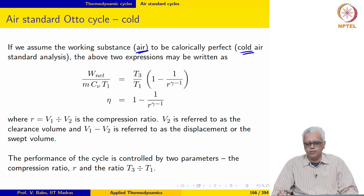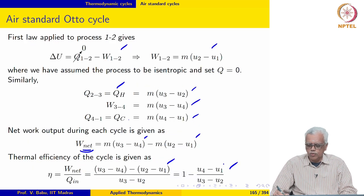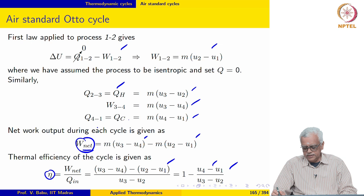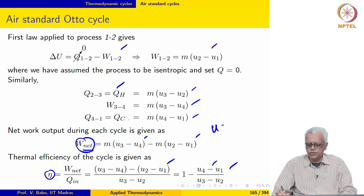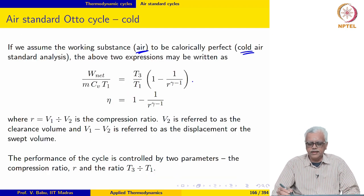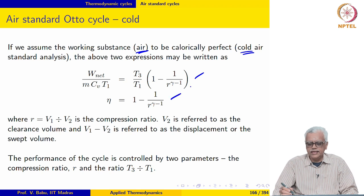If we assume the working substance — air — to be calorically perfect, this is called the cold air standard analysis. We may then rewrite these expressions for both efficiency and specific net work using the fact that U = CᵥT, yielding simplified expressions for specific power and efficiency.